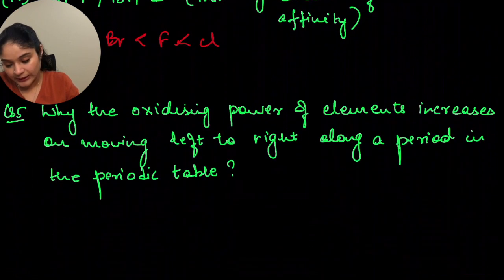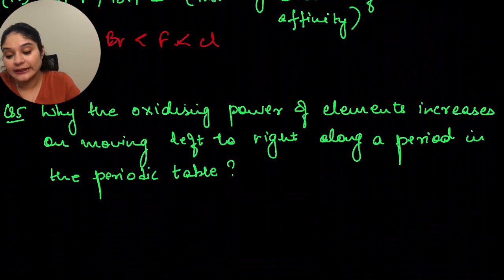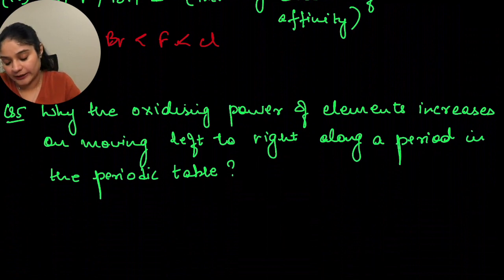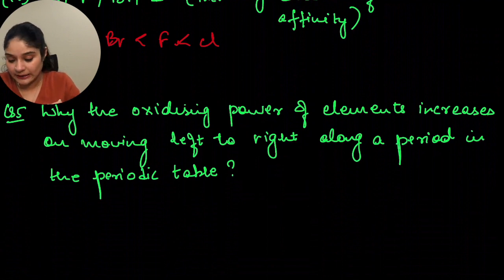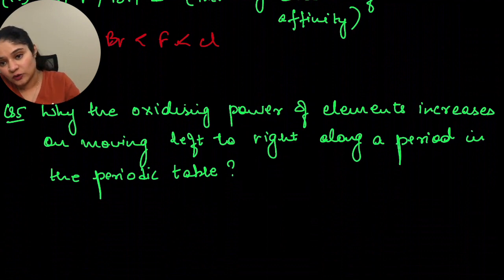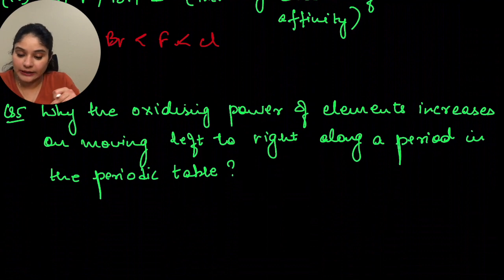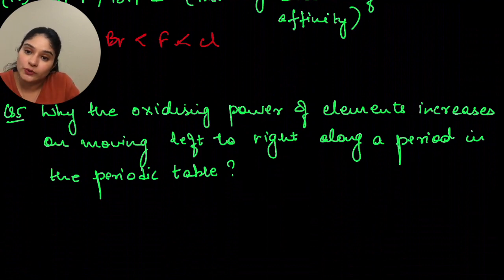Why does the oxidizing power of elements increase on moving from left to right along a period in the periodic table? Oxidizing power directly depends upon electronegativity and non-metallic character. As your electronegativity and non-metallic character increases from left to right, your oxidizing power also increases from left to right.